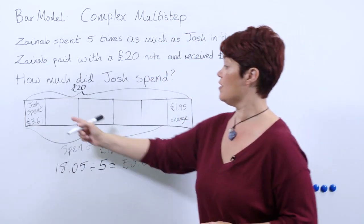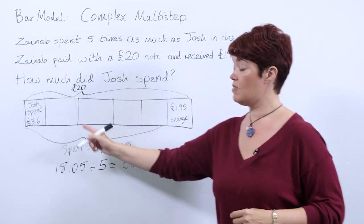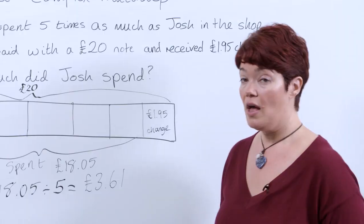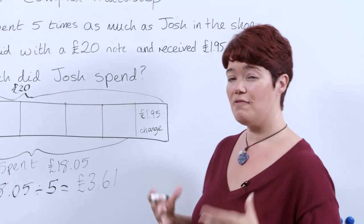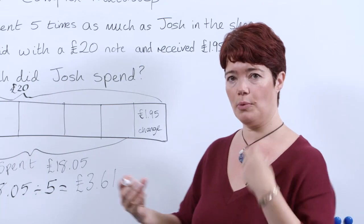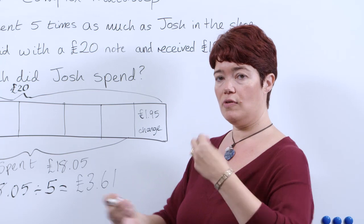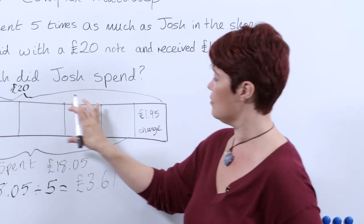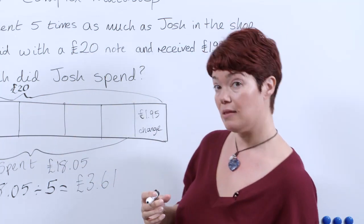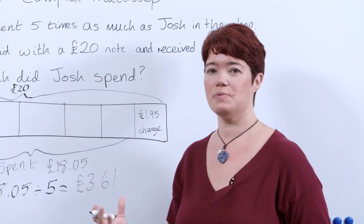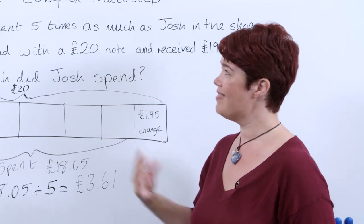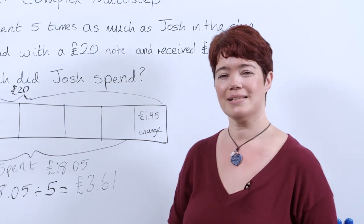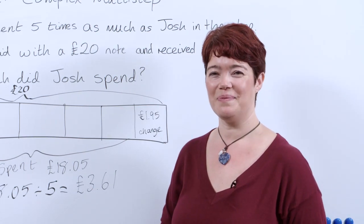Going back to our bar, we can fill that in. We could also fill in the other sections and check that they add up to £18.05. Another good way of really embedding this is to use actual money — to put money into here so that pupils get a real idea of mixing the concrete with the abstract. And that's how to use our bar model when looking at really complex multi-step problems.